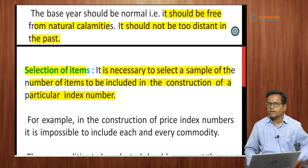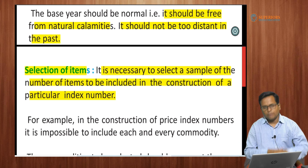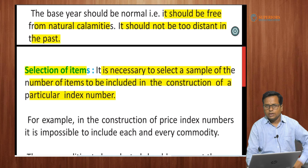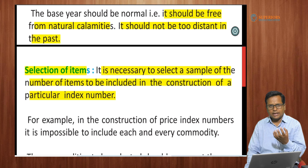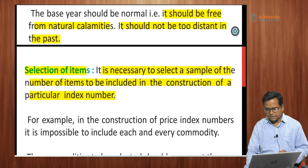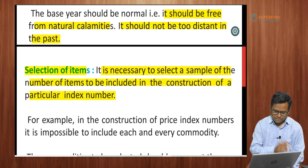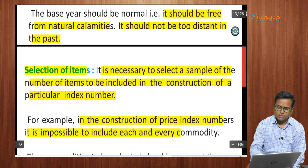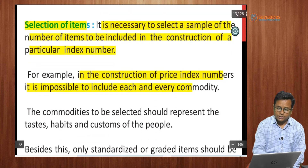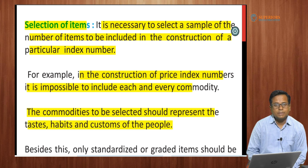It is very difficult to take into account the prices of all types of goods and services while measuring the price index, so here we will have to select a sample. In the construction of price index numbers, it is impossible to include each and every commodity. The commodities selected should represent the tastes, habits, and customs of the people.